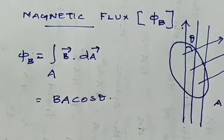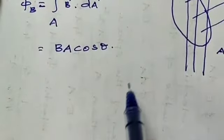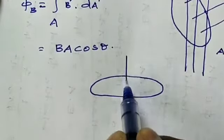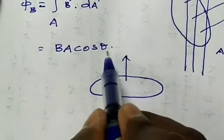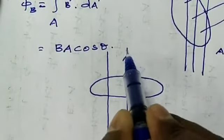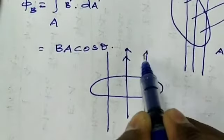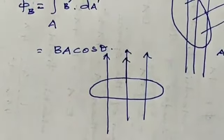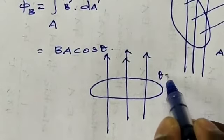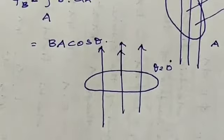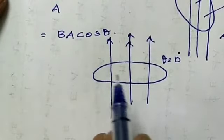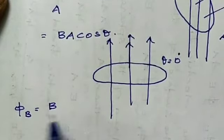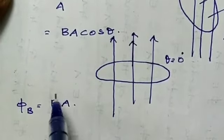The angle θ is measured from the magnetic field to the normal of the area. When the magnetic field is perpendicular to the area — that is, in the same direction as the normal — theta equals 0 degrees. Substituting: cos 0 = 1, so the magnetic flux is maximum. Therefore, Phi_B = B A, which is the maximum value of magnetic flux.